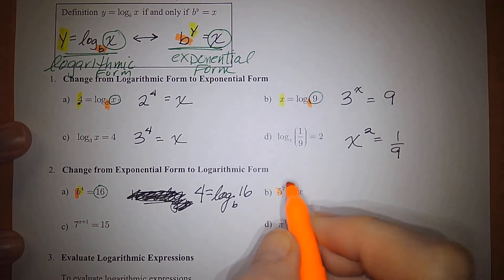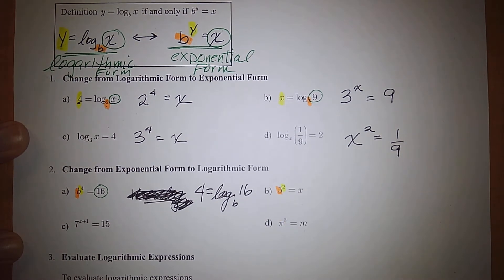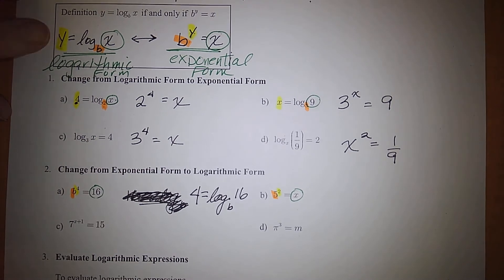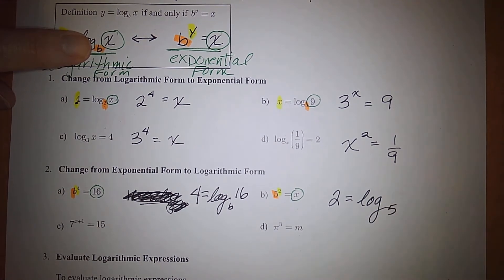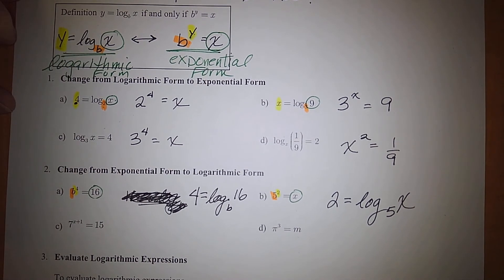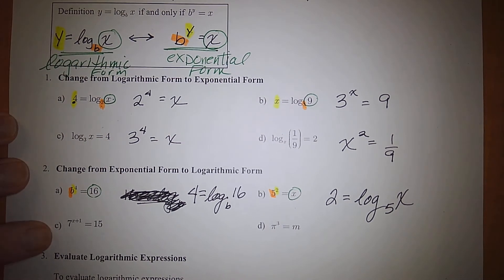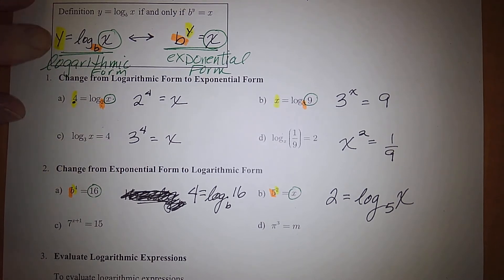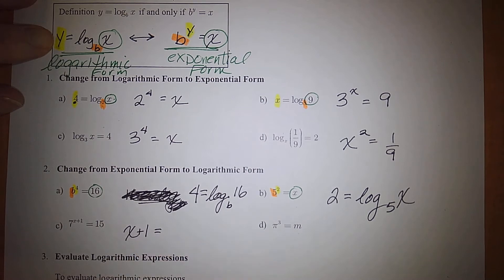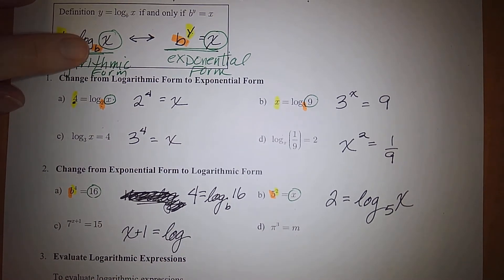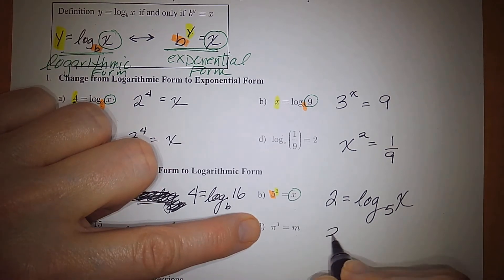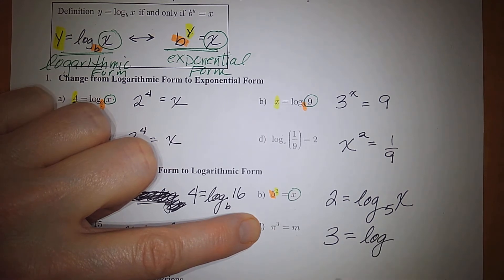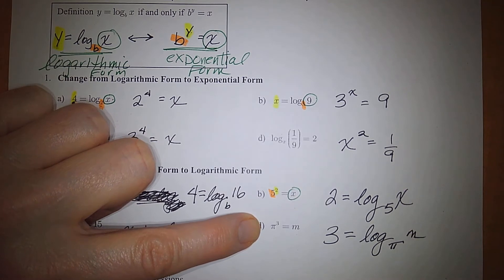For the next example, the base is 5, the exponent is 2, and the value is x. In logarithmic form we start with the exponent: 2 equals log base 5 of x. For the following one, the exponent is x plus 1, so we write: x plus 1 equals log of the base of the value. It takes practice putting everything in the right spots.